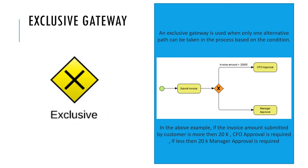Exclusive gateway is used when only one alternative path can be taken in the process based on a condition. For example, if the invoice amount submitted by the customer is more than 20,000, then CFO approval is required. If it is less than 20,000, manager approval is required. So only one path can be taken. An exclusive gateway is represented with an X symbol inside a diamond shape.